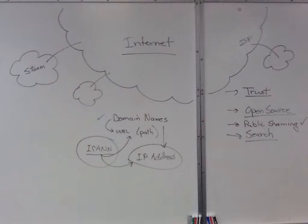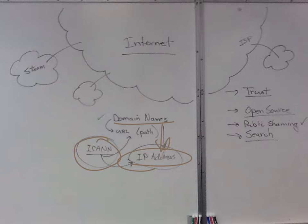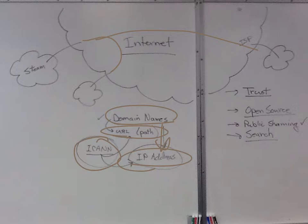We talked about ICANN, domain names, and IP addresses — an IP address is how we move through the internet. We talked about URLs and paths, we listened to Danny Hillis, and we talked about trust, open source, and reviewed public shaming. These are things students need to finish up from Unit 2.